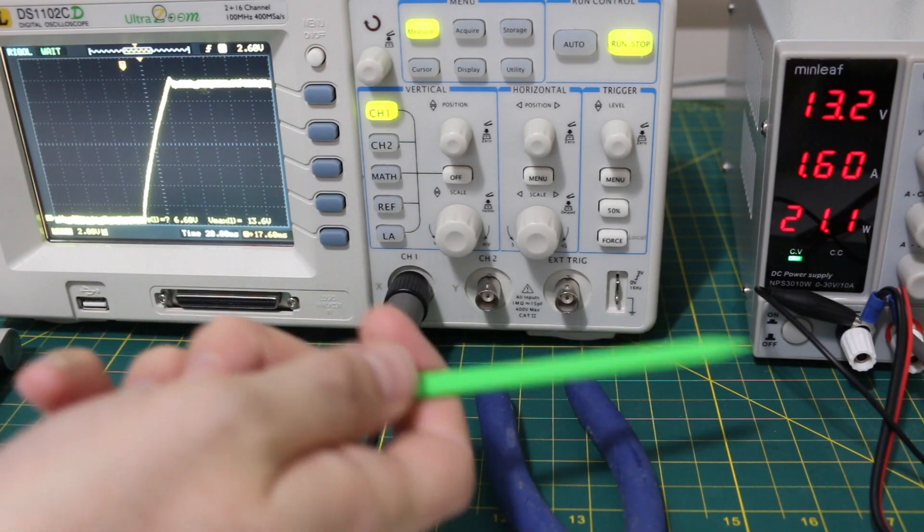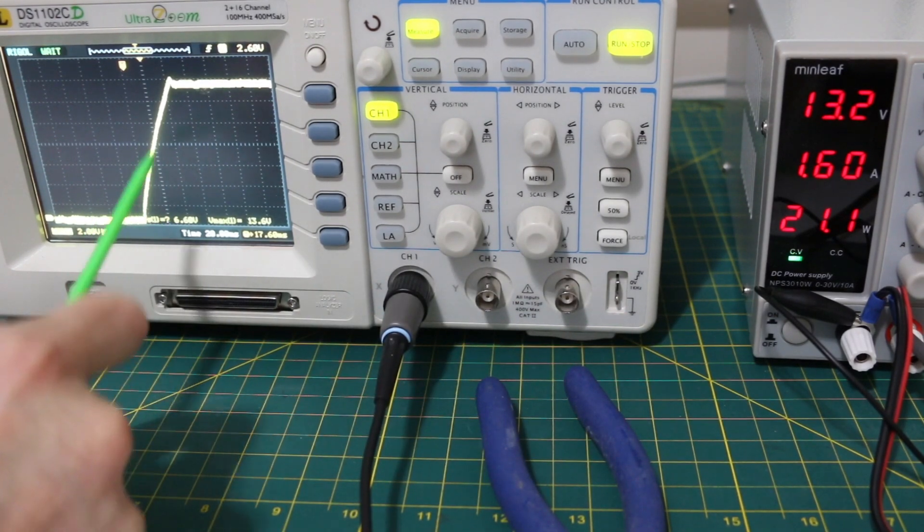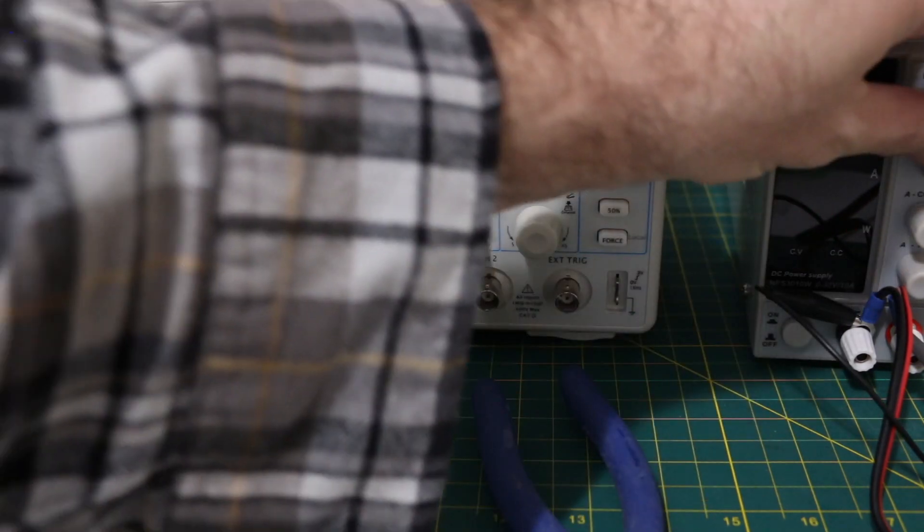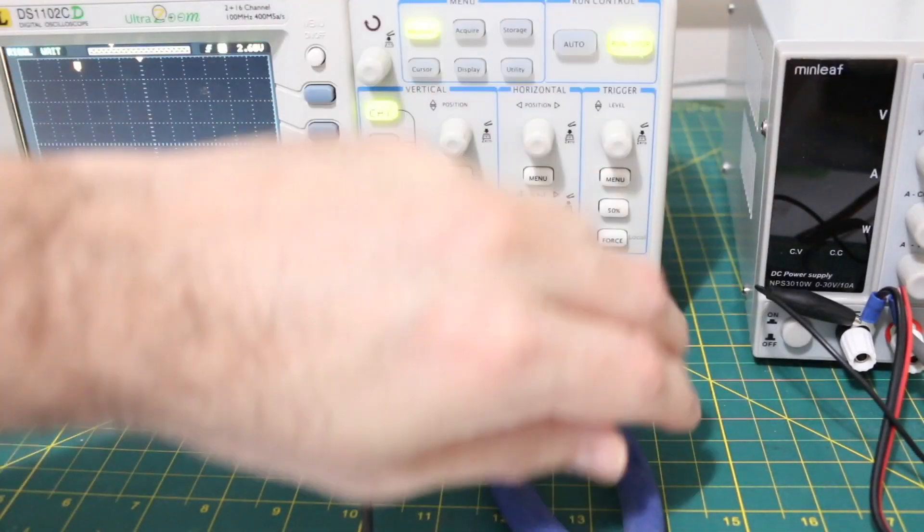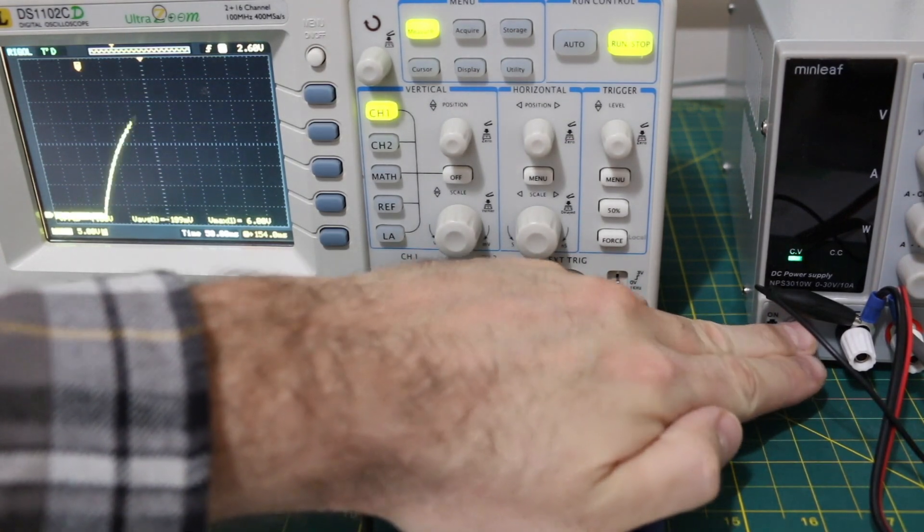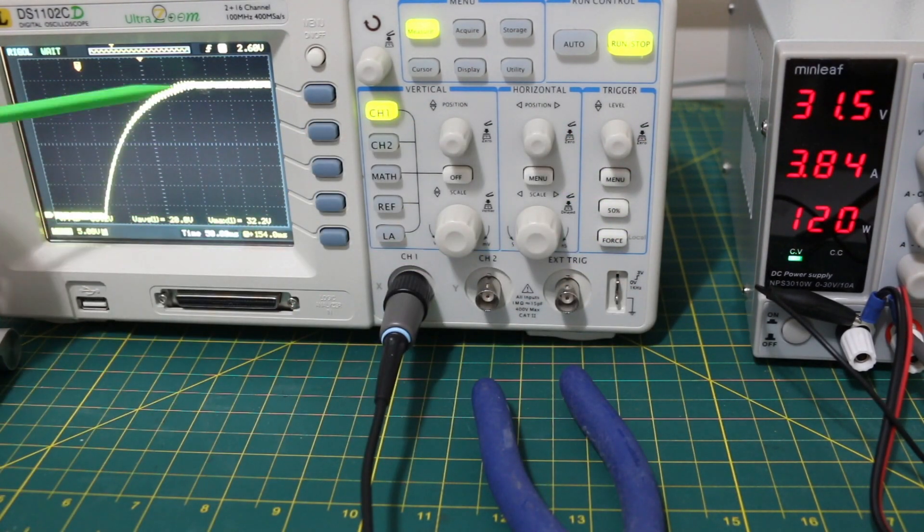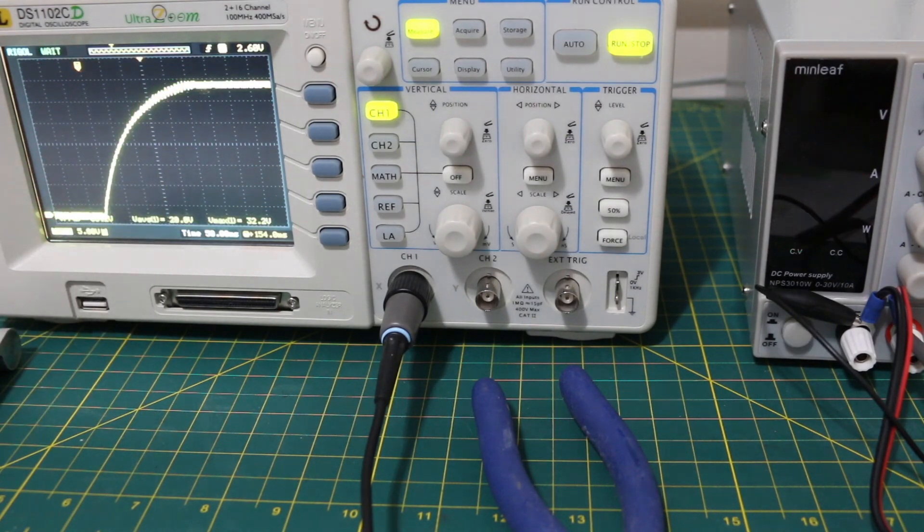So I turn this to maximum output voltage and I'll turn it on. So our 31.5, we get a maximum 32.2. So it looks like our output voltage always has a slight overshoot, less than a volt higher than what we've set for, before it stabilizes. So that's not too unusual for a power supply like this being turned on.